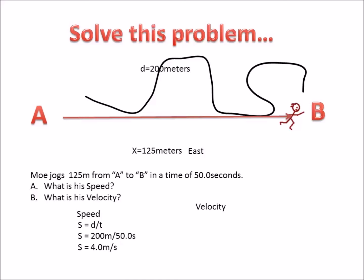Now let's look at the velocity. Velocity is displacement over time — not distance over time. From the diagram, the displacement is 125 meters east, or positive 125 meters. So his velocity is positive 125 meters divided by 50 seconds, which gives us 2.5 meters per second — positive 2.5 meters per second, or 2.5 meters per second east.